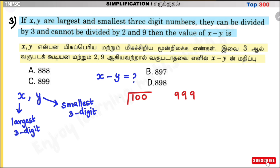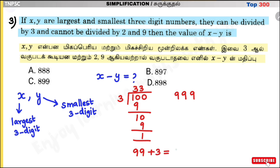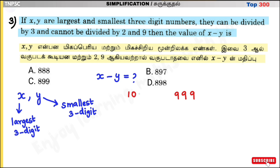Find the smallest three-digit number divisible by 3 but not by 219. Dividing 100 by 3: 3 × 33 = 99, remainder 1. So 100 − 1 = 99 is divisible by 3, but it's two digits. 99 + 3 = 102. The smallest three-digit number divisible by 3 is 102.